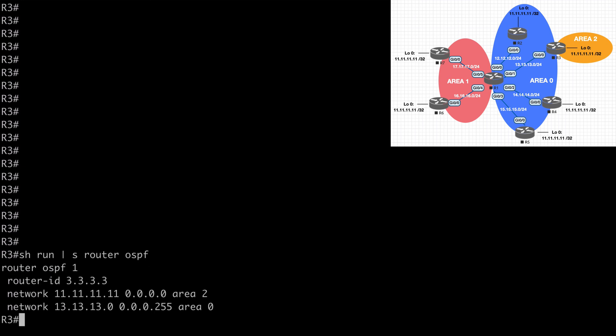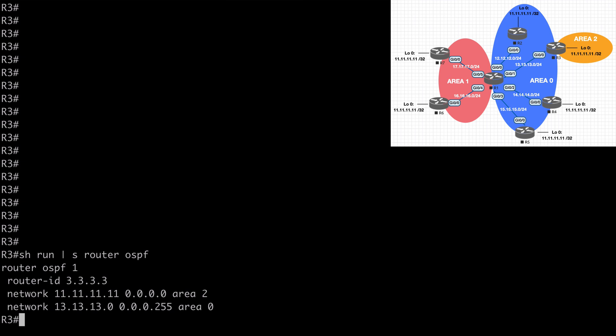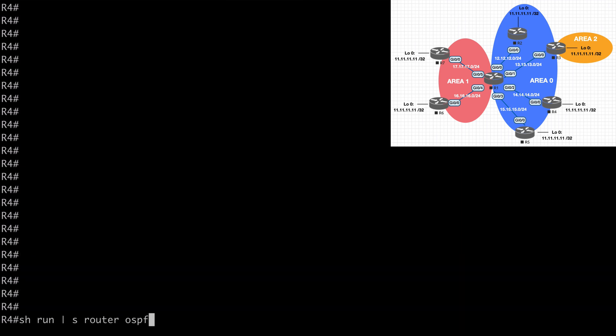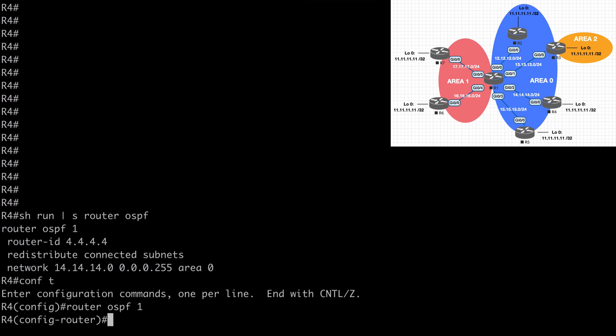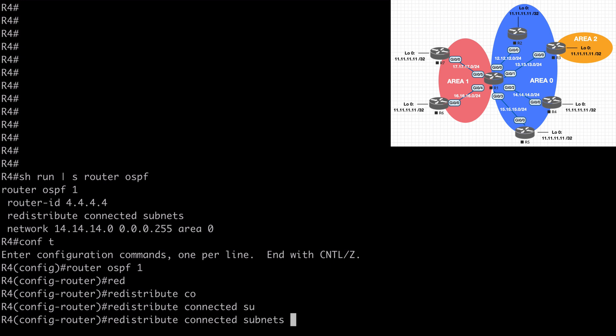On R3, we have a different situation. The loopback is being advertised into area 2, giving us an inter-area prefix advertisement. Let's jump to R4 — this router is participating in area 0, but the loopback interface is not participating in OSPF at all. This will allow us to create an external prefix advertisement. In order to do that, let's redistribute this loopback into OSPF: router OSPF 1, redistribute connected subnets.